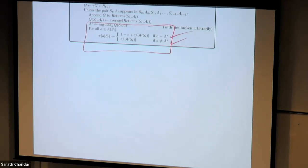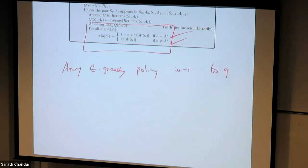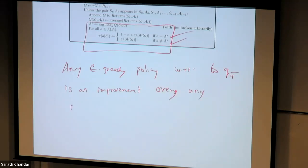It so happens that the policy improvement theorem still holds. Any epsilon-greedy policy with respect to q_pi is an improvement over any epsilon-soft policy.